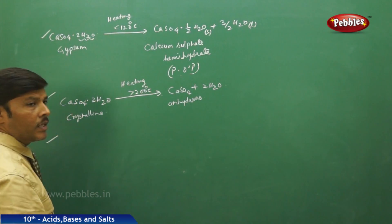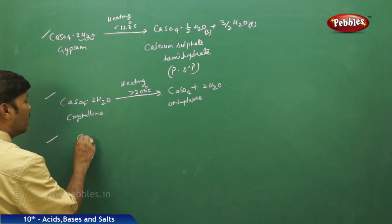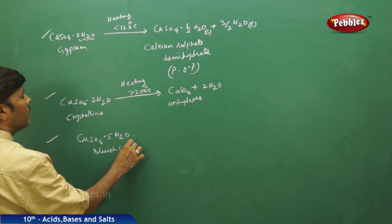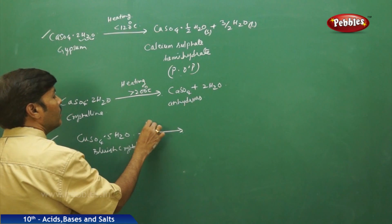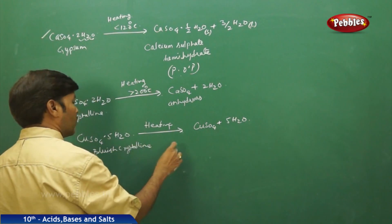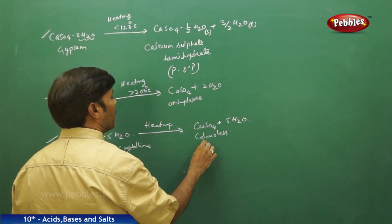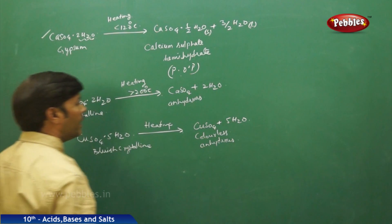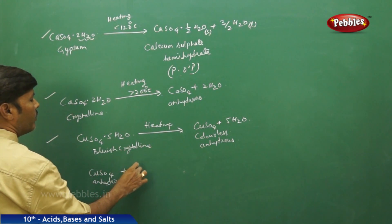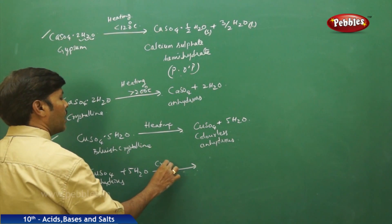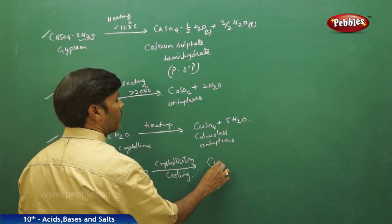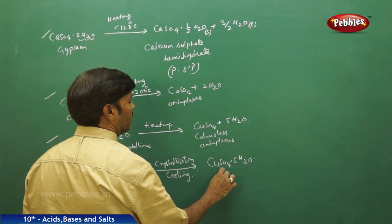A beautiful example to understand the difference between crystalline and anhydrous salt: copper sulphate pentahydrate (CuSO₄·5H₂O) becomes colourless and anhydrous when heated. When you reverse this reaction — adding 5 molecules of water to anhydrous copper sulphate and subjecting it to crystallisation (cooling at low temperature) — you get back the blue crystals of copper sulphate pentahydrate (CuSO₄·5H₂O).